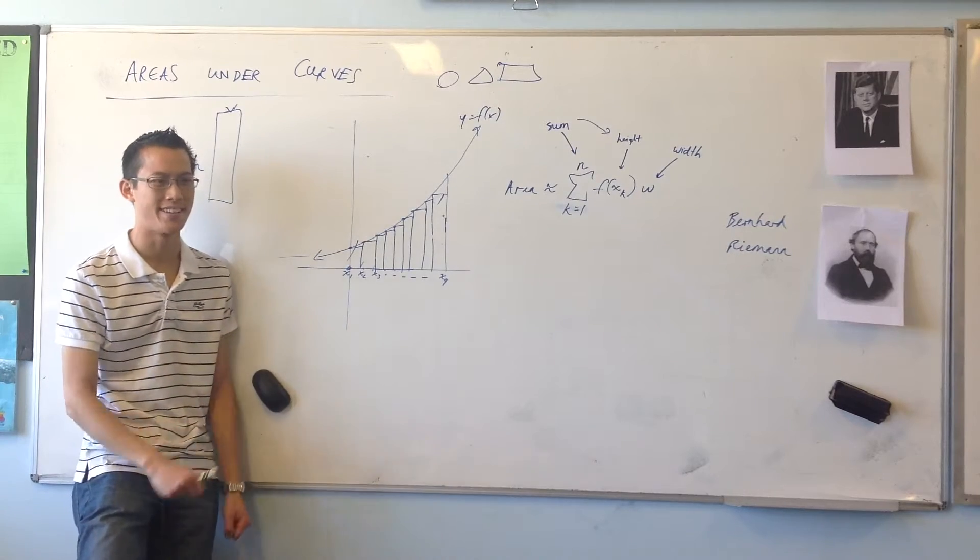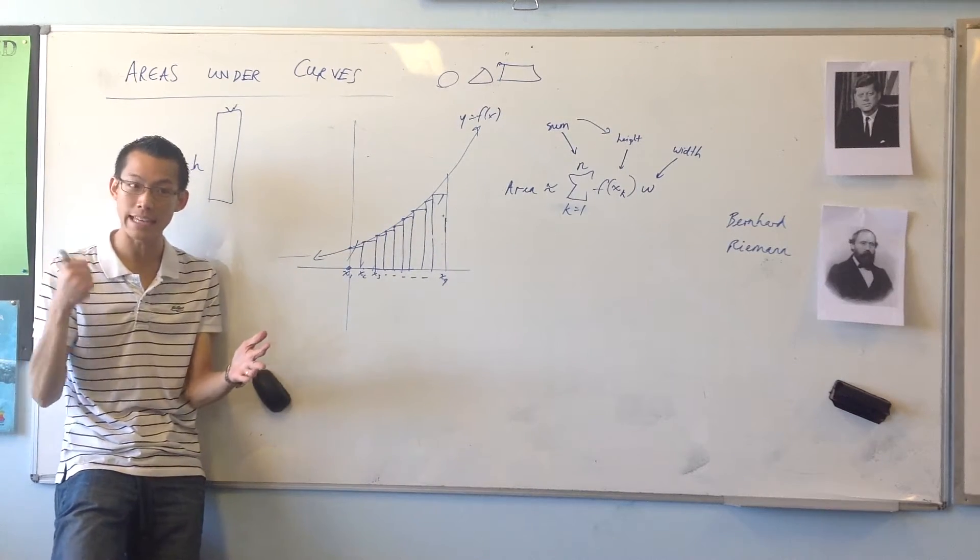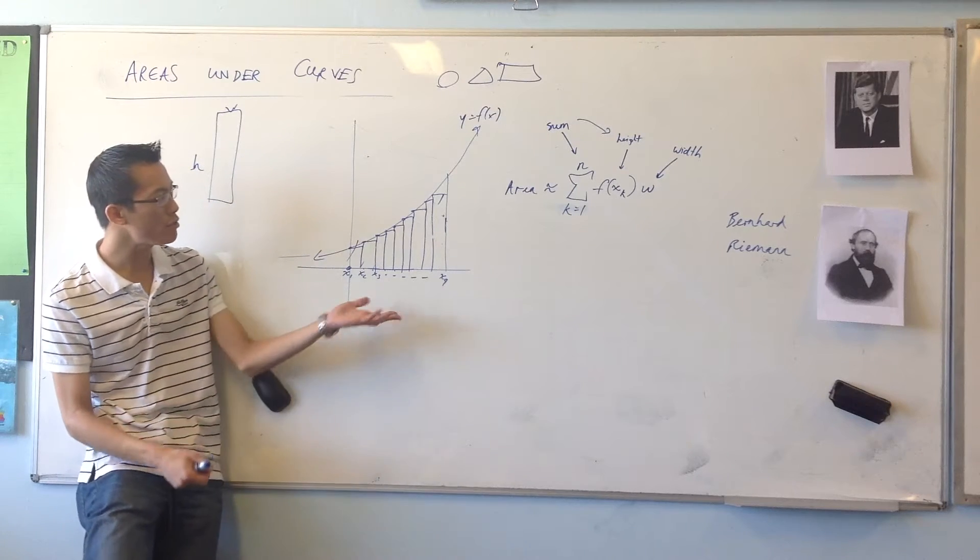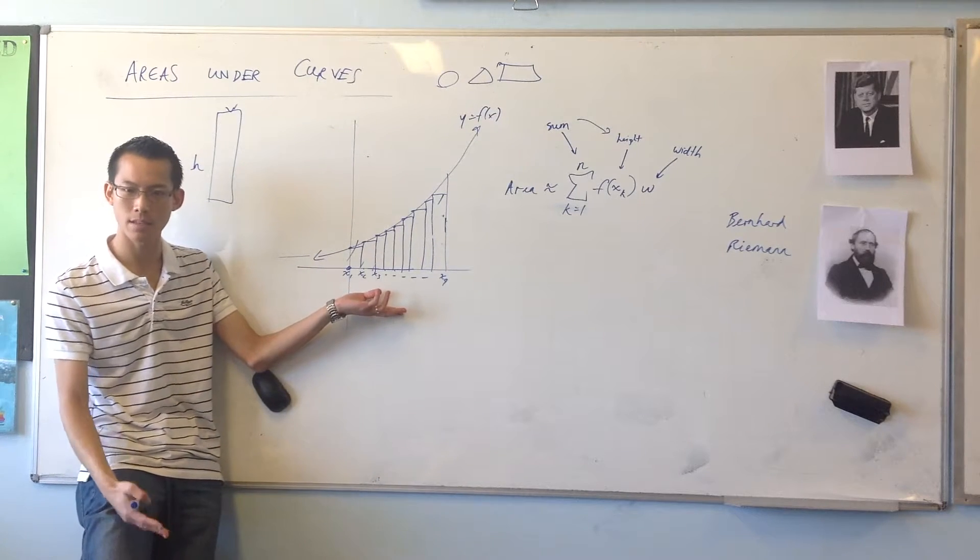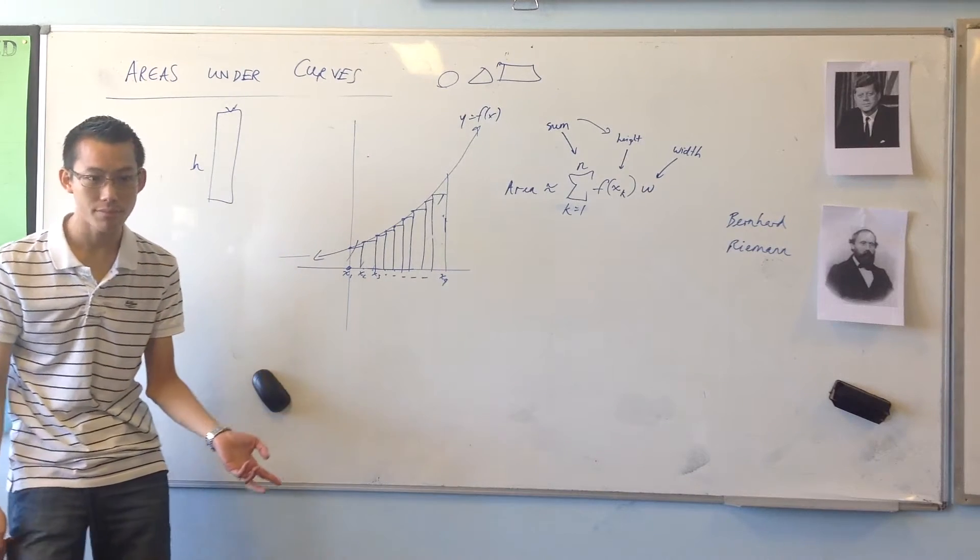So a physicist or an engineer might be happy with this. You can put in, maybe not nine, maybe say 90, and that would be sufficient. But a mathematician is not satisfied with such adequate precision. They want something to be exact.